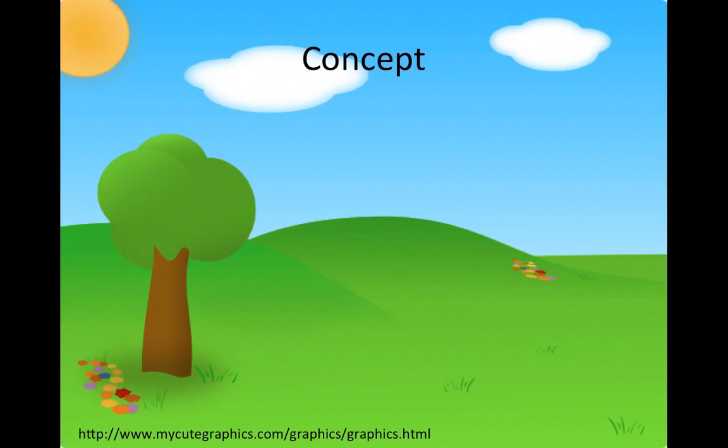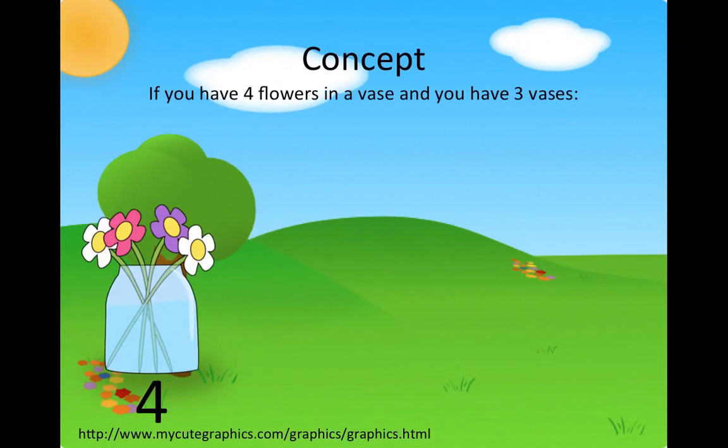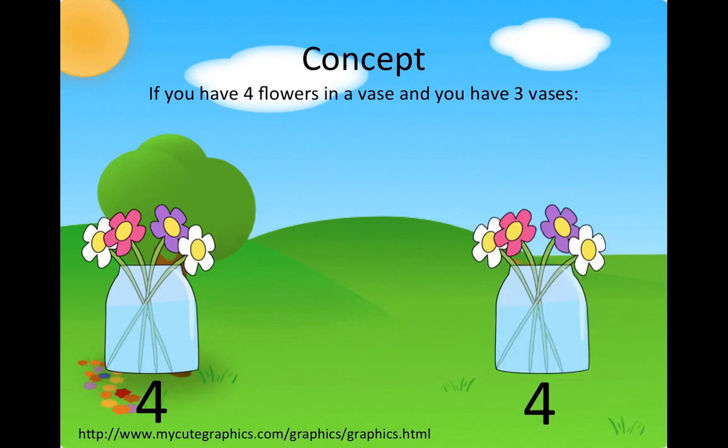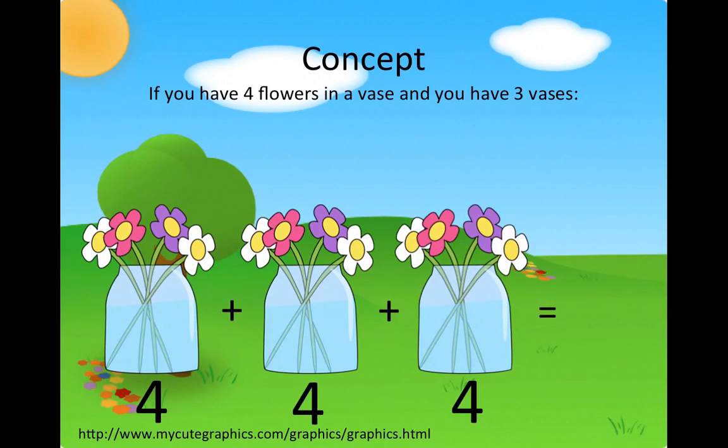The concept of multiplication. If you have 4 flowers in a vase and you have 3 vases, the total number of flowers you have is 12.